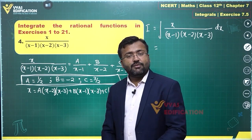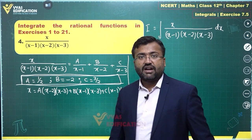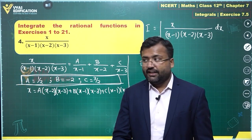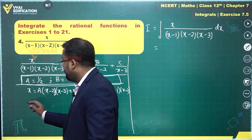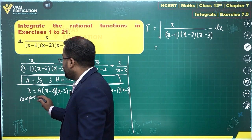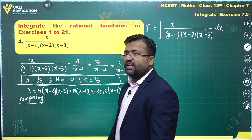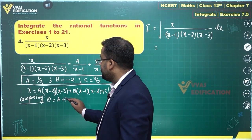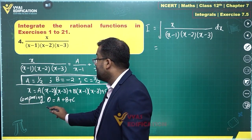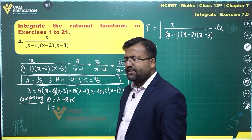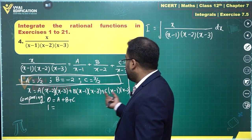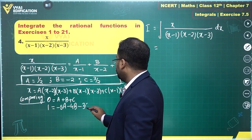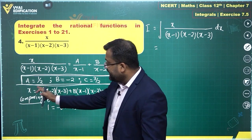Some exam boards want you to solve using comparison of coefficients, treating this as an identity without shortcuts. Comparing coefficients of x squared on both sides: the left-hand side gives 0, and the right-hand side gives A plus B plus C. So 0 equals A plus B plus C. Comparing coefficients of x: 1 equals minus 5A minus 4B minus 3C.